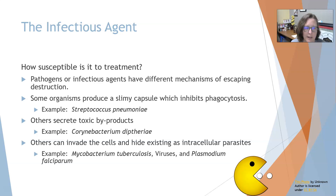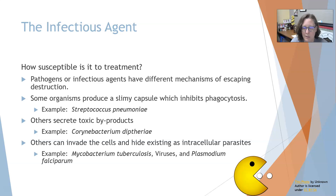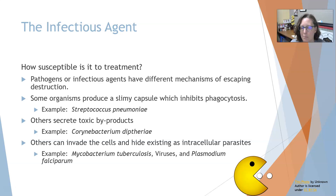Within the infectious agent, you also have to ask how susceptible is this organism to treatment. Pathogens have different mechanisms of escaping destruction because they have set up home in your body and want to stay there. Some could produce a slimy capsule which inhibits phagocytosis — the eating of bacteria by white cells — so the white cell either can't eat it, or if it does, it can't break it down and destroy it. An example of an organism that produces a slimy capsule is Streptococcus pneumoniae.